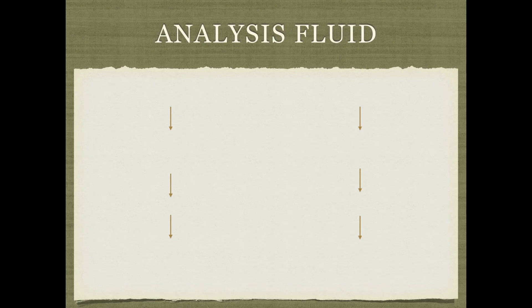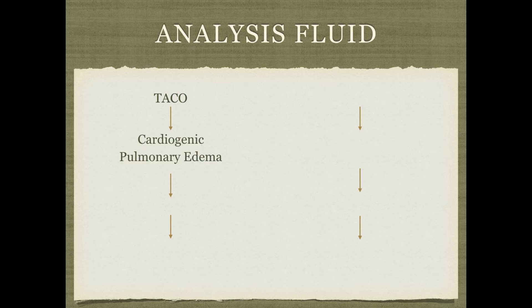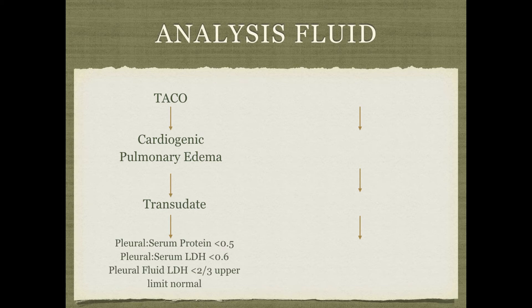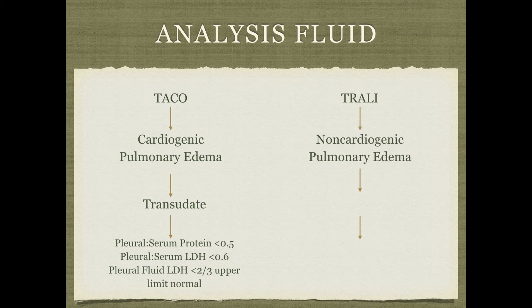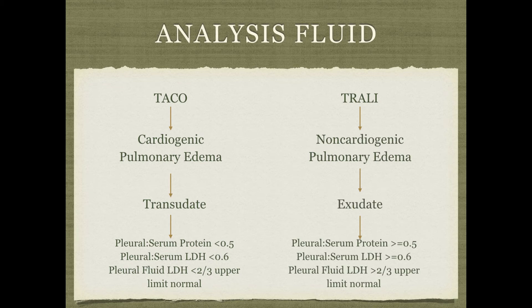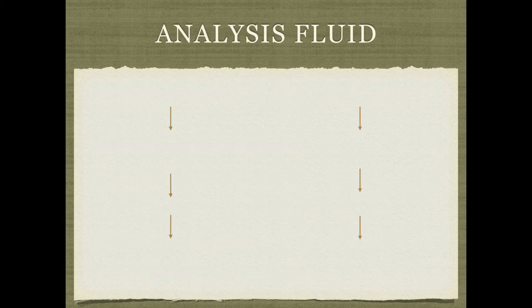If you want to get fancy, you can do a fluid analysis of the pulmonary edema fluid. TACO is cardiogenic pulmonary edema — so it's a transudate with a low protein ratio. TRALI is non-cardiogenic — so it's an exudate with a high protein ratio. That said, I've never actually seen anyone do this in practice.